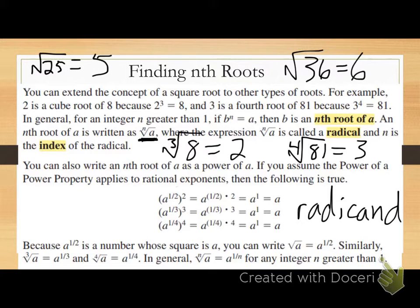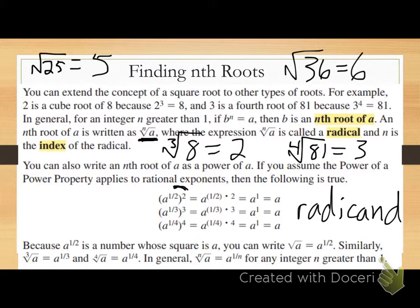We can also write an nth root of a as a power of a. If the power-of-a-power property applies to rational exponents, then a to the one-half raised to the second power gives a to the first, or just a — since one-half times two equals one. Similarly, a to the one-third raised to the third becomes a, and a to the one-fourth to the fourth becomes a. So the square root of a equals a to the one-half, the cube root of a is a to the one-third, and the fourth root of a is a to the one-fourth.